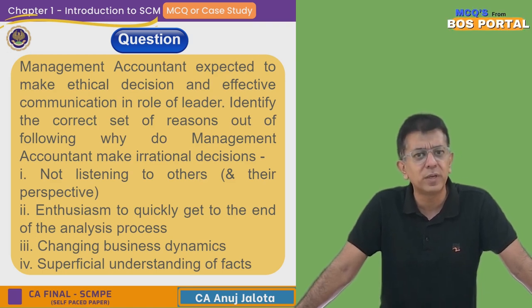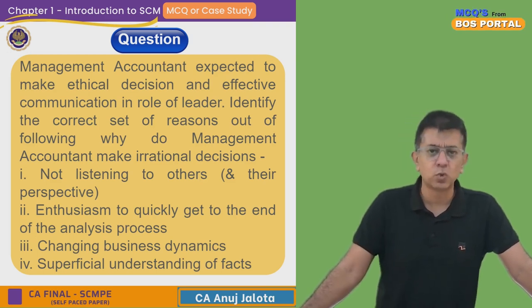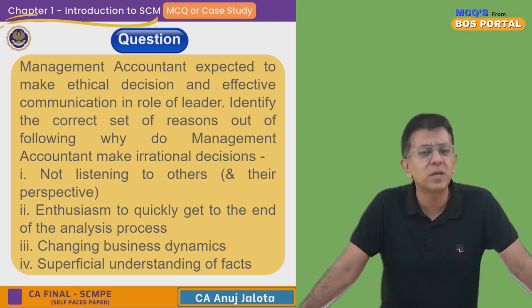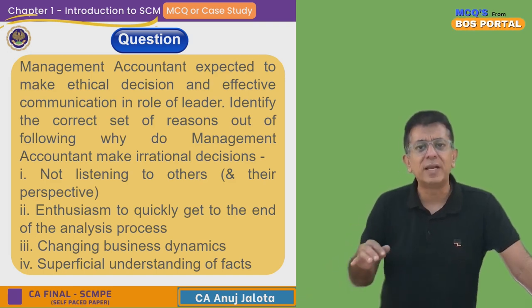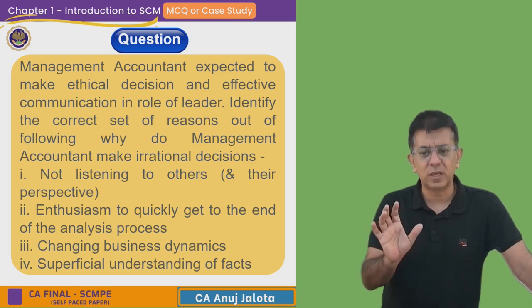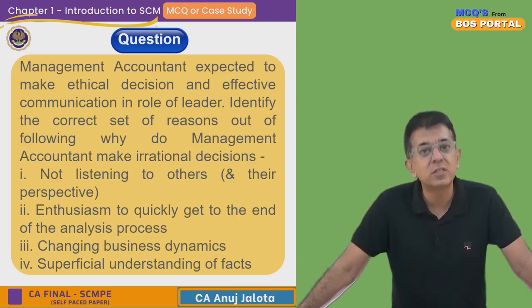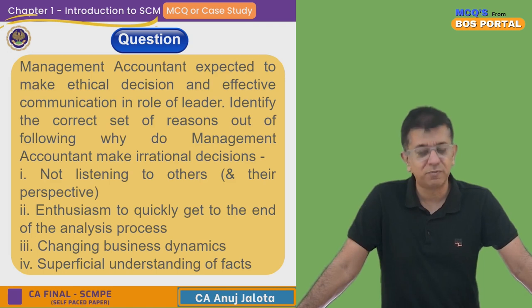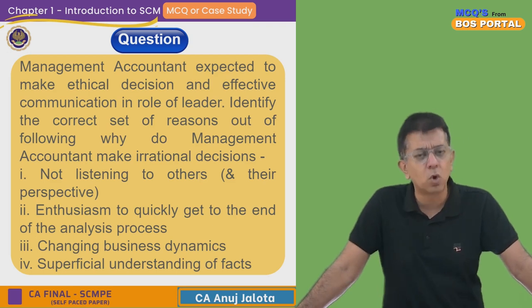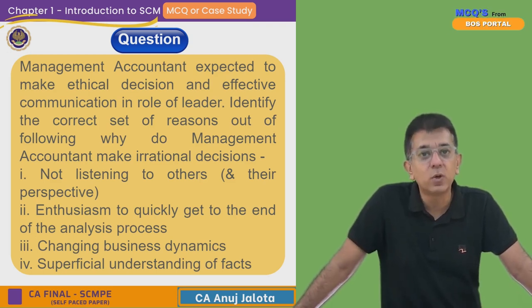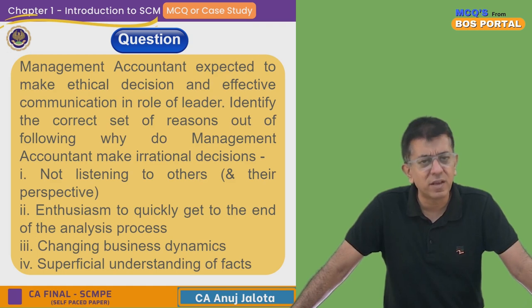The fourth reason is superficial understanding of the facts. This happens to us as students too — we only think from the marks' point of view without going into depth. For example, with derivatives, open interest, and so on, we may not understand deeply. That superficial understanding leads to problems — just like 95% of people make losses in futures and options because they don't fully understand how the system works.